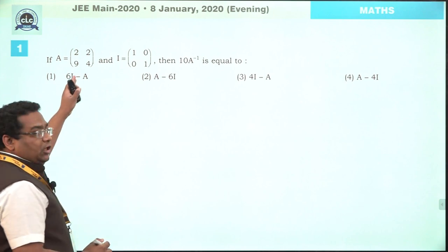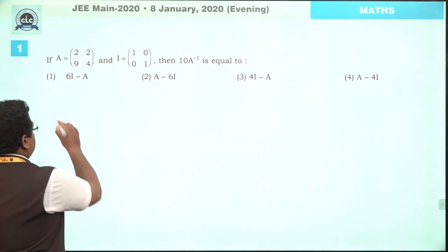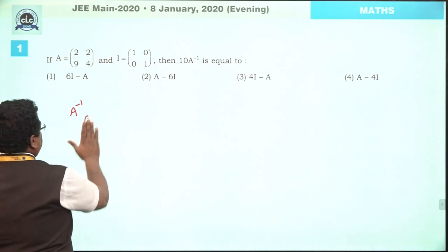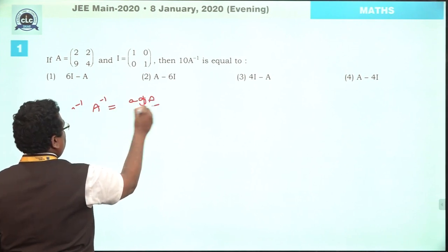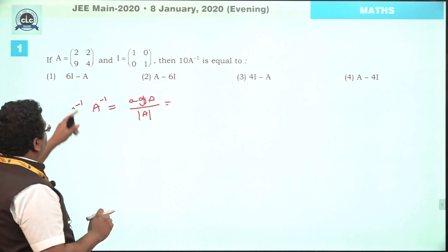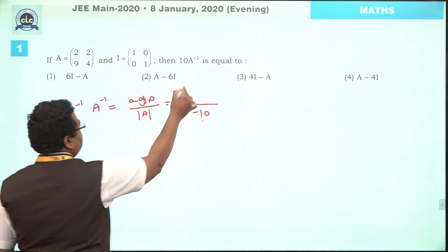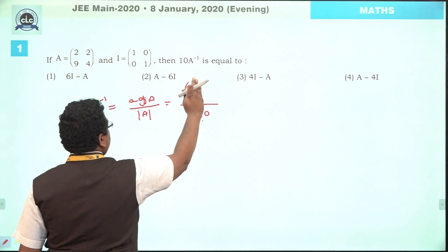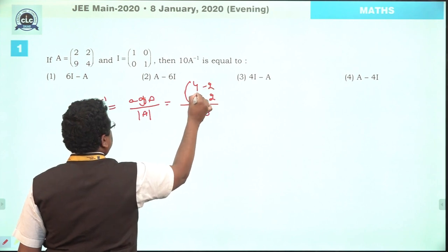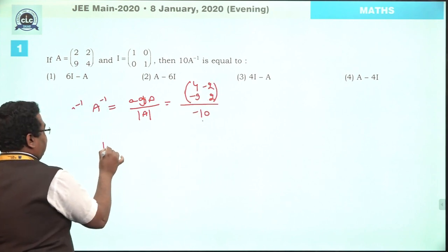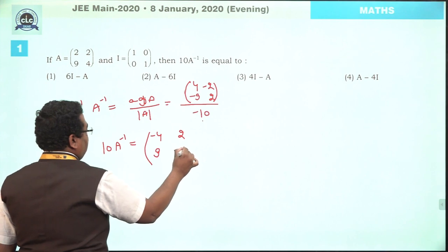Question number 1. A matrix and an identity matrix have been given. We have to find 10 times of the A inverse matrix. As we know, A inverse equals adjoint of A upon determinant of A. The determinant of A is 8 minus 18, that is minus 10. The adjoint of A will be minus 4, 2, minus 2, and minus 9.